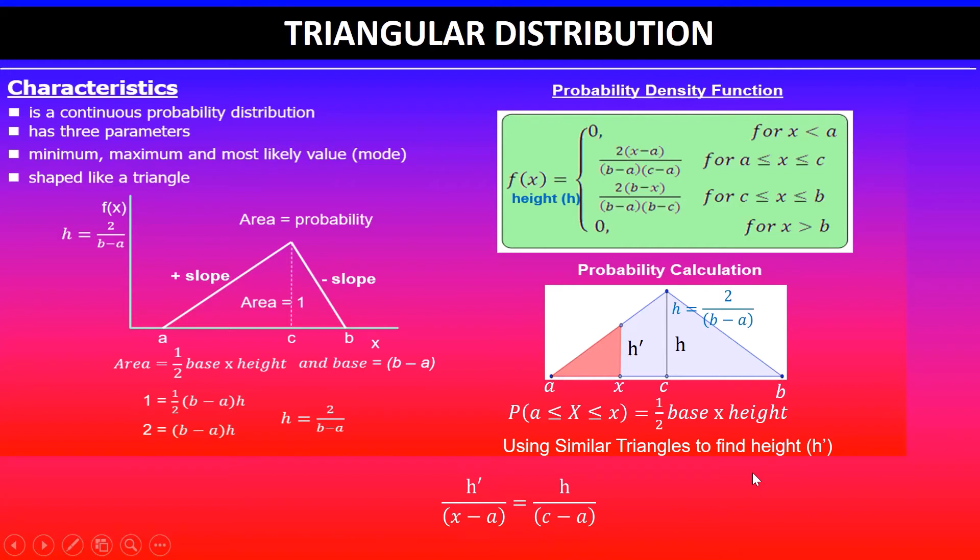I can quickly rearrange and make h dash the subject. This gives me, if I move (x - a) on the other side, h into (x - a) divided by (c - a). This is the formula that you can use easily to work out the height, and this requires less substitution than that one.